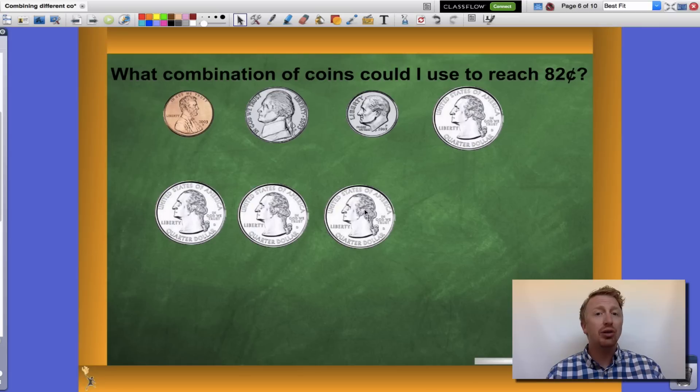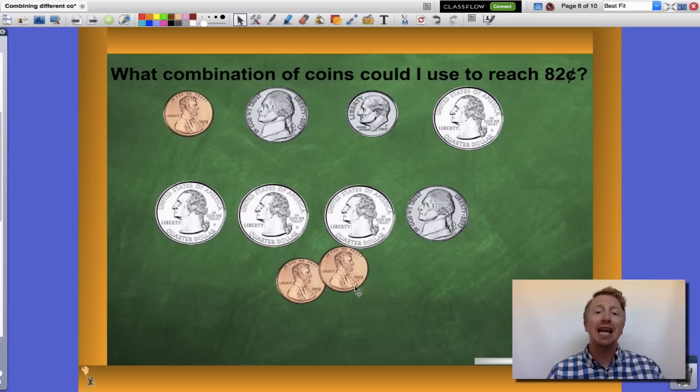That's close to 82 cents. If I add my nickel to 75, I'm at 80 cents. And finally, two pennies will get me to 82 cents.